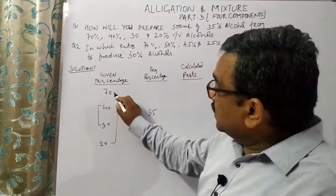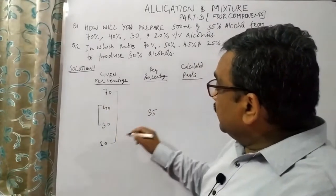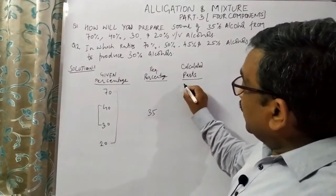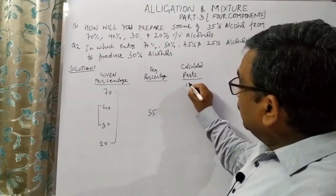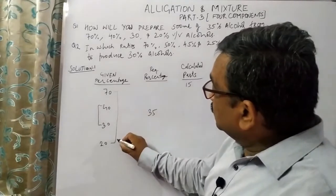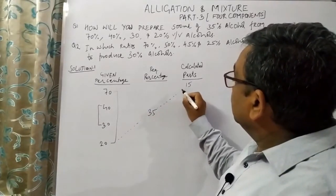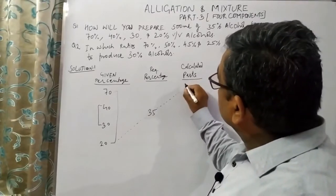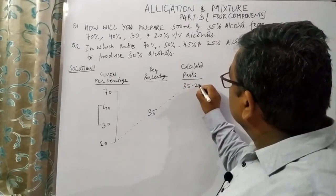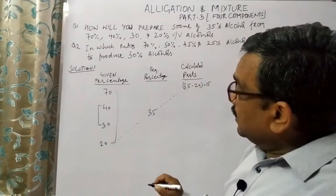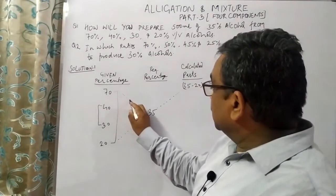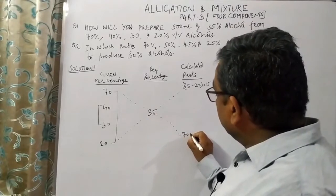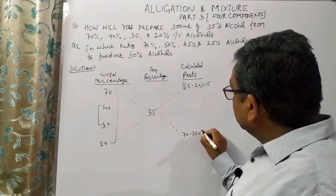From the 70 and 20 combination, cross-verifying and calculating the parts: how many parts of 70% are required? 35 minus 20 is equal to 15 parts. Next, 70 minus 35 is equal to 35 parts.